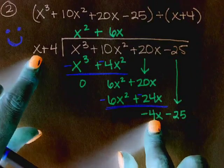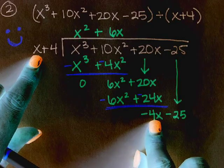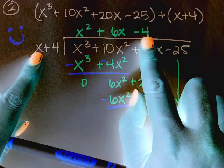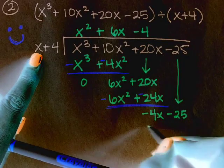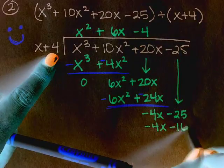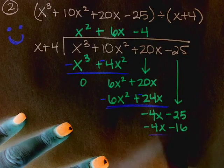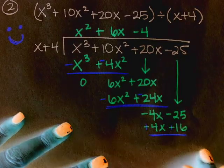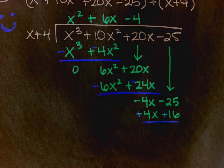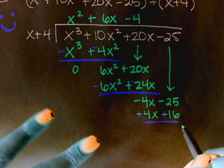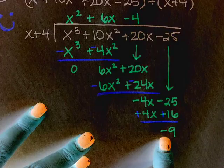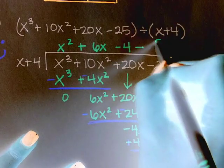Okay. And then X times what is negative 4X? Negative 4. Okay. So then I do X times negative 4 is negative 4X. Negative 4 times 4 minus 16. And then I draw the line and change the signs. And negative 25 plus 16 is negative 9. And since my remainder is negative, I'm going to write minus 9 over X plus 4.